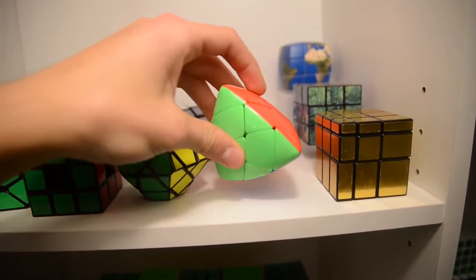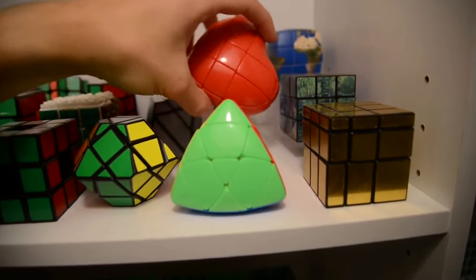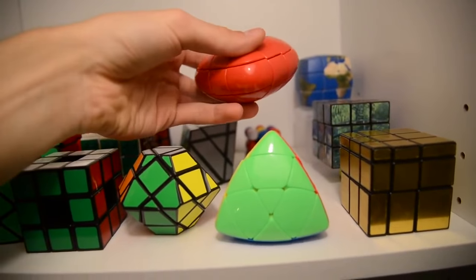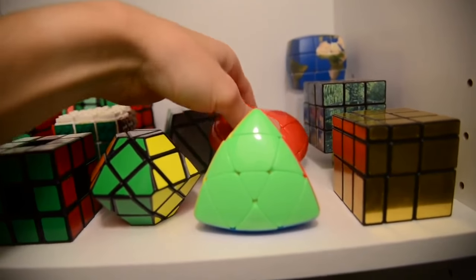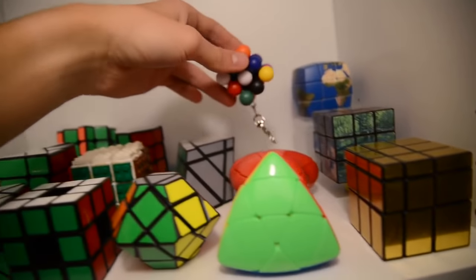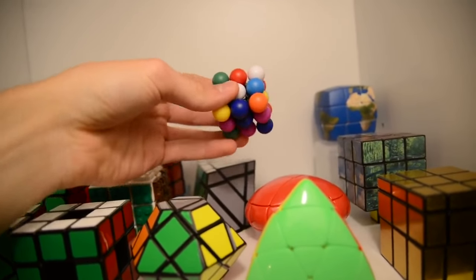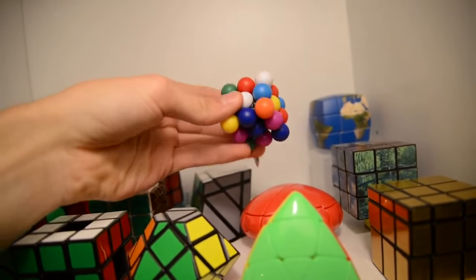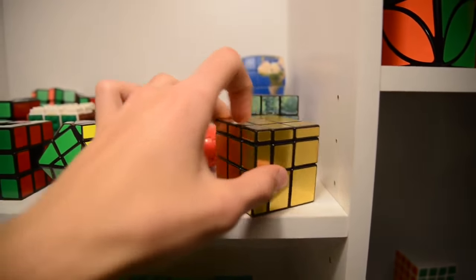Next up the 3x3 master morphics. A heart cube. And this is the only puzzle that I don't know how it's solved. It is very frustrating because it's hard. Maybe someday I will figure it out. And next up we have the mirror block in gold color.